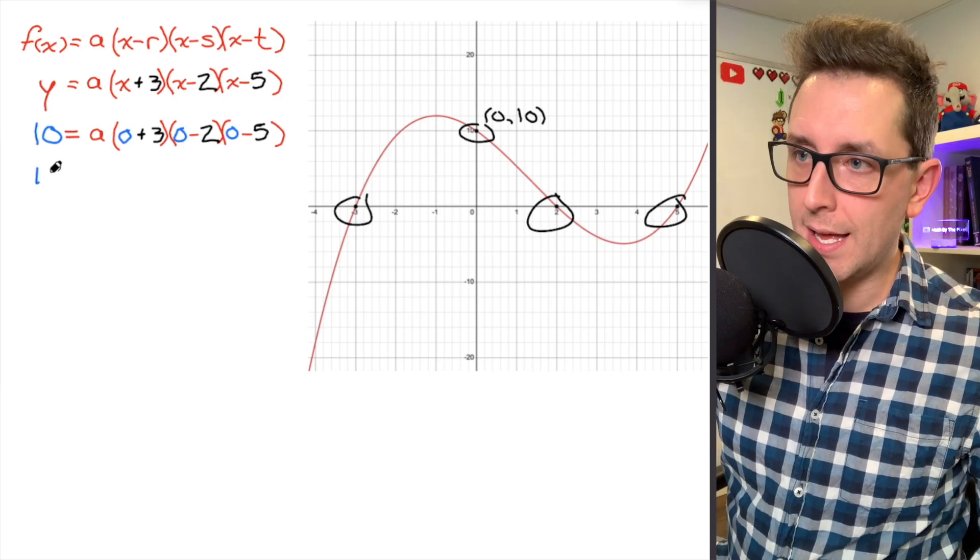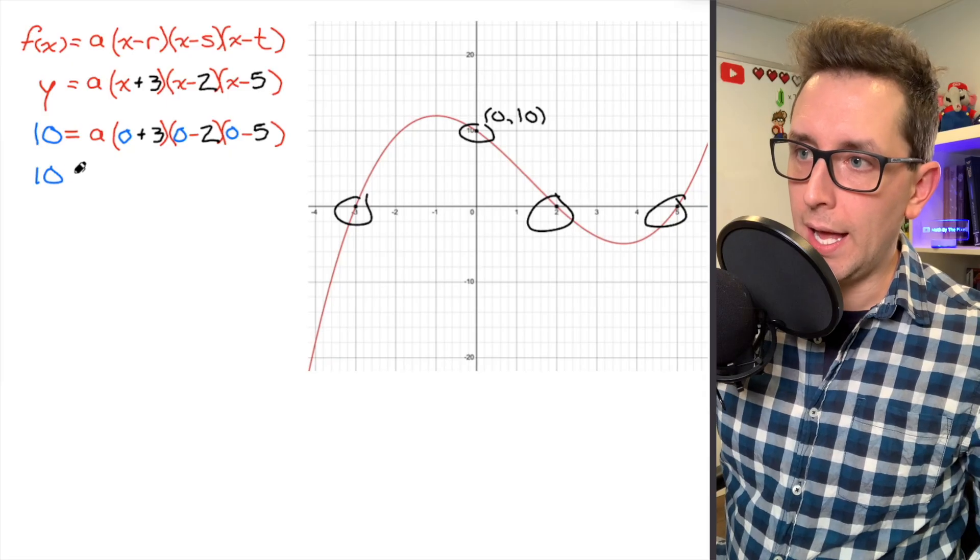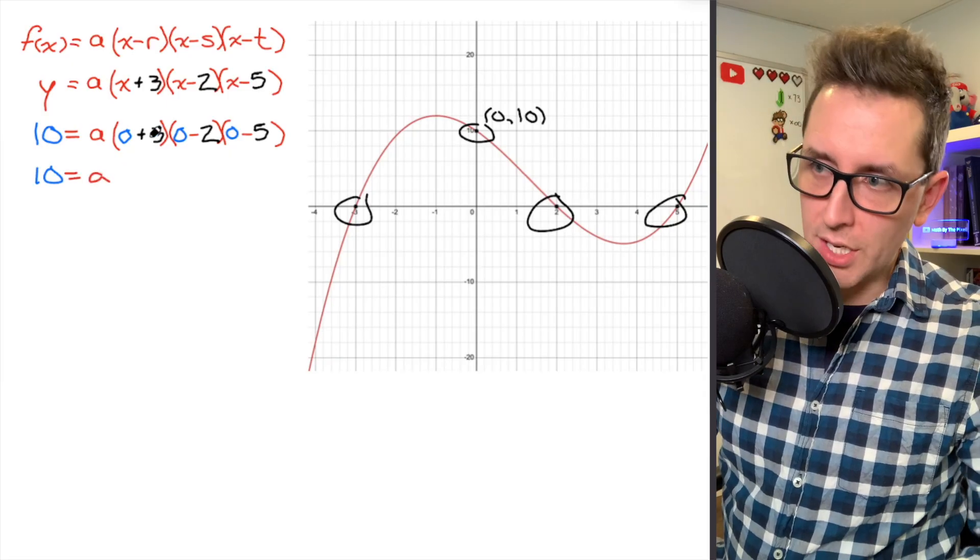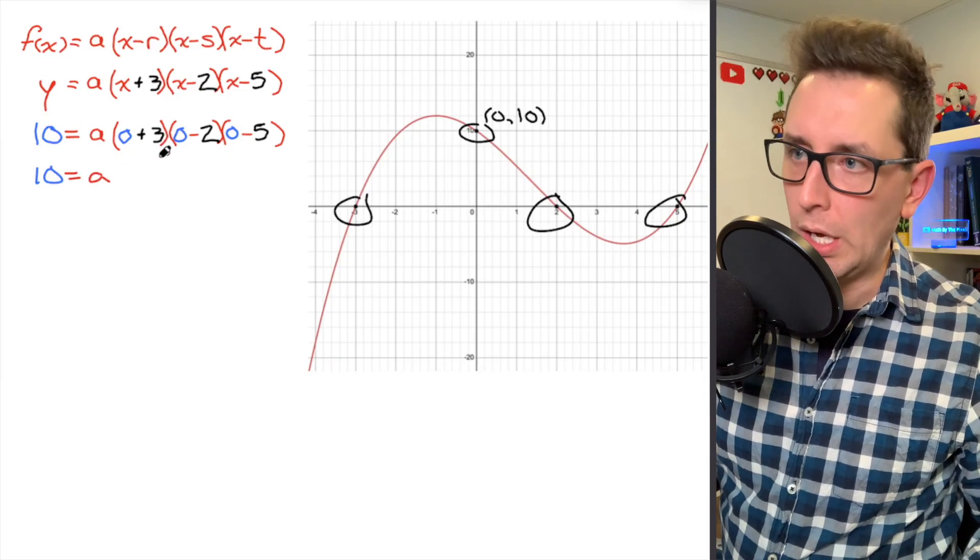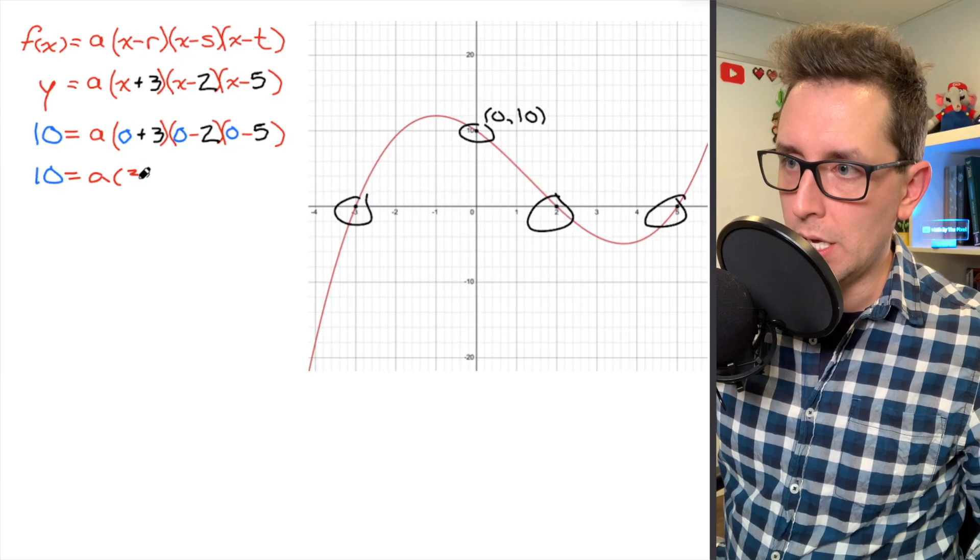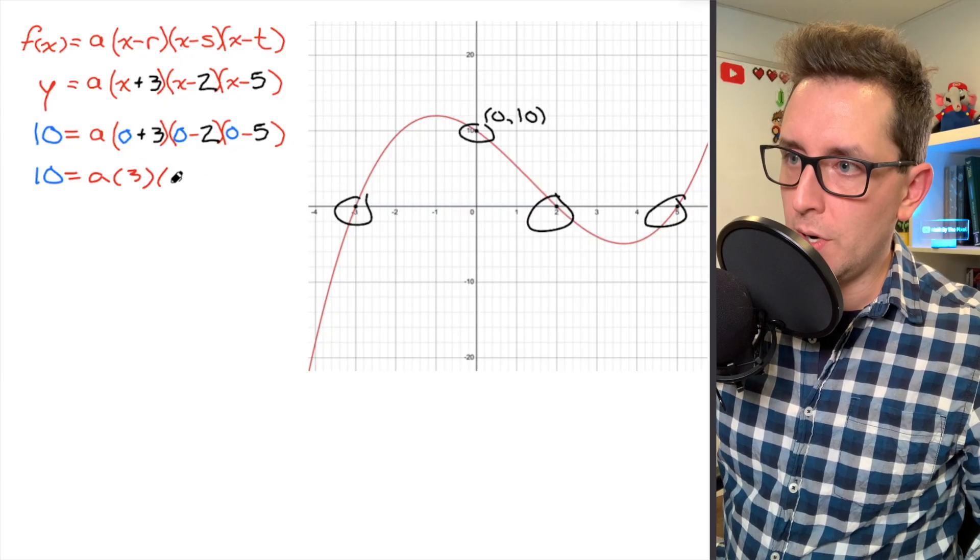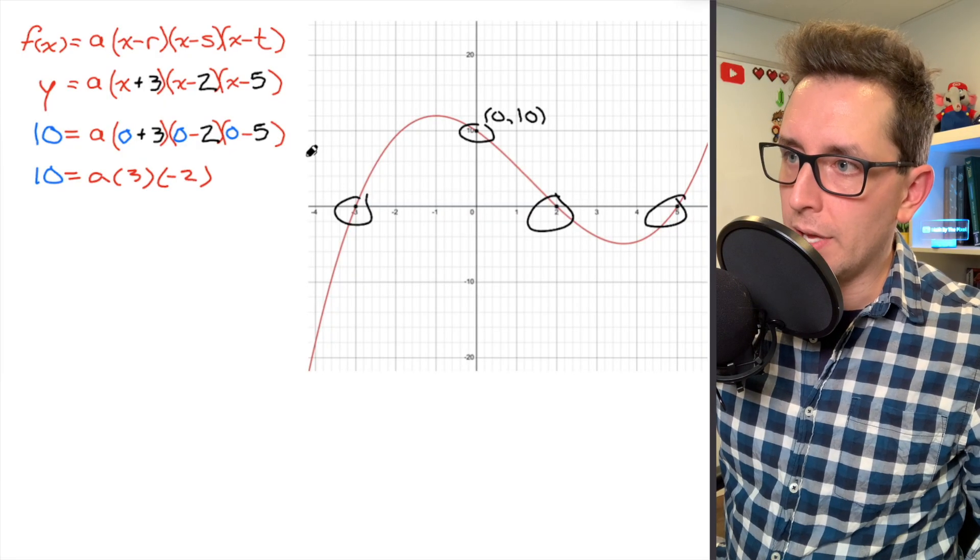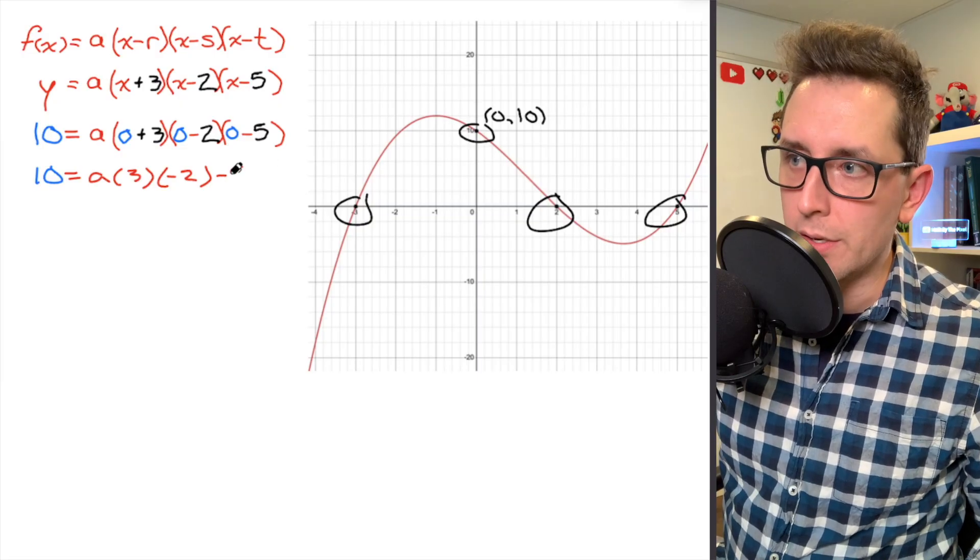So I'm going to leave that 10 alone on the left-hand side here, and I'm going to jump over to the right-hand side and just clean all this stuff up. So I have 0 plus 3. I know that's just 3. I've got 0 minus 2. I know that's just negative 2. And then I've got 0 minus 5. That's just going to be negative 5.